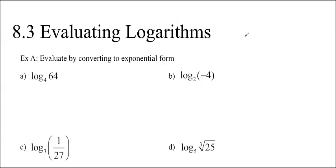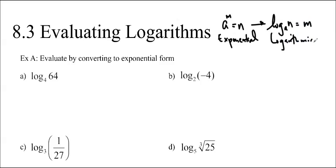So I just wanted to remind you of the two forms that we can use. If we have a to the m is equal to n, this is an exponential form. And we can rewrite it as follows in logarithmic form: log base a of n is equal to m. So basically the n and the m switch places when I put it into logarithmic form. And we're going to be switching back and forth in order to solve.